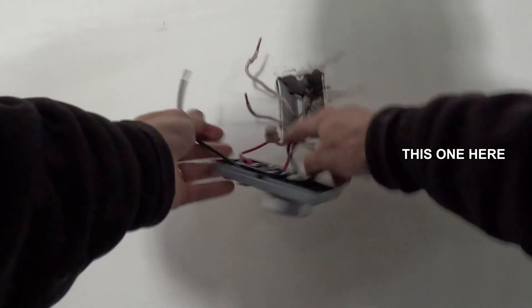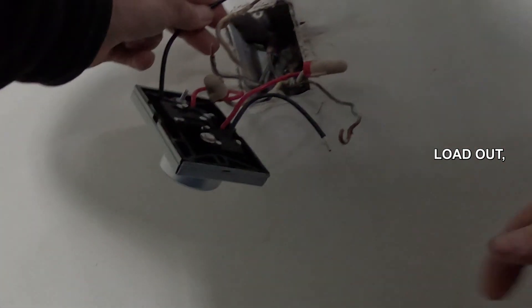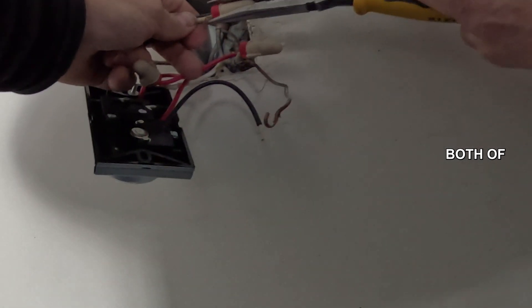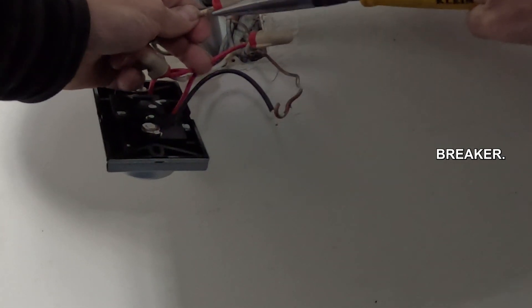And then this one here is your load, which you'll put with the other white here. This is my load out, which goes to my white going out to my heater. Like I mentioned before, this will just make sure when the thermostat's off it shuts off both of the circuits, both of the 110 on the breaker.